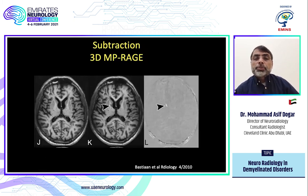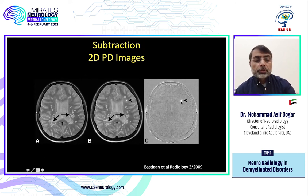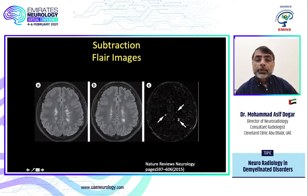Subtraction imaging is helpful: subtract old from new exam to highlight new lesions. This is especially useful when there are many lesions. In a patient with 16 lesions, subtracting old from new scan automatically identifies only the new lesion, which can then be confirmed by comparing images directly. Another subtle example: with potentially a hundred lesions it's difficult to identify new ones, but subtraction clearly shows the new small lesion. This will play a great role in the future for accurate diagnosis of progression.